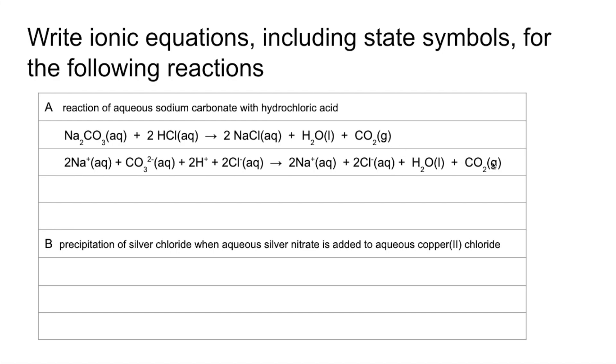Now all we do is cancel like terms left and right. You can see the sodium ions there on both sides in the same quantity as are the two chloride ions, so we'll get rid of those. They're our spectator ions. And that's the ionic equation for that one.